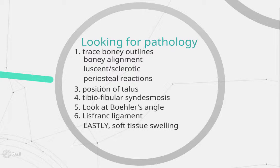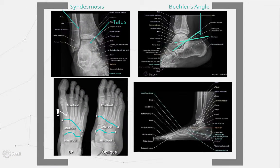For pathology, firstly trace all the bony outlines on an x-ray looking for any break in continuity. Check to see that the bones are aligned correctly and look for any particular areas of lucency or sclerosis that could indicate pathology. Review areas include checking the position of the talus, the tibiofibular syndesmosis, Bohler's angle, and the Lisfranc ligament. Lastly, look if there is any soft tissue component to the injury.